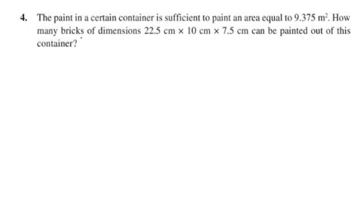The paint in a certain container is sufficient to paint an area equal to 9.375 meters square. That is a container. This container is 9.375 meters square. How many bricks of dimension 22.5 cm × 10 cm × 7.5 cm can be painted out of this container?